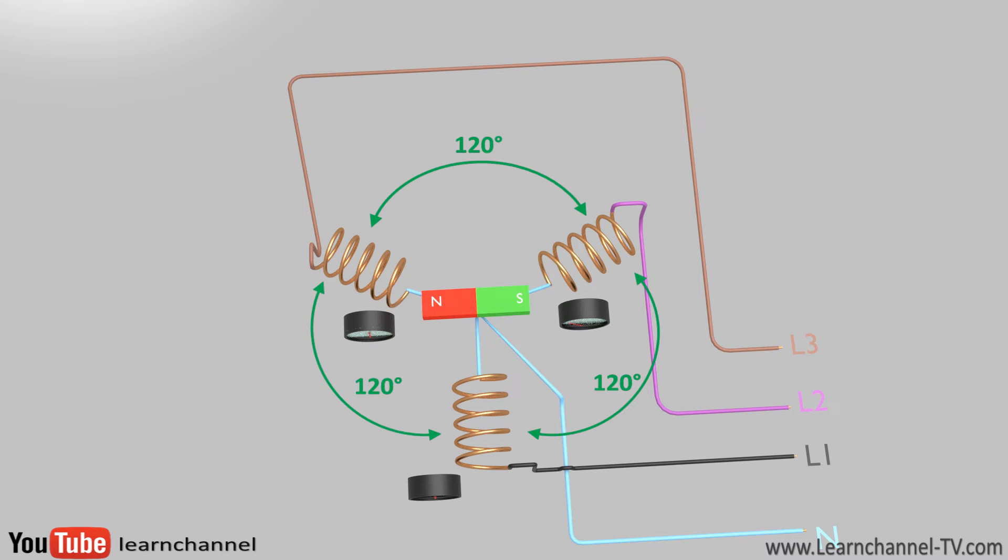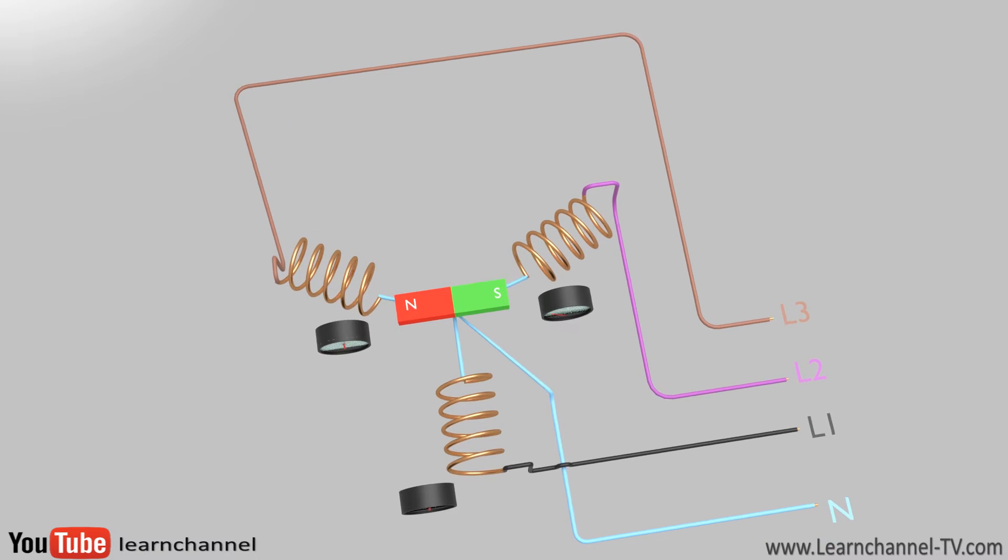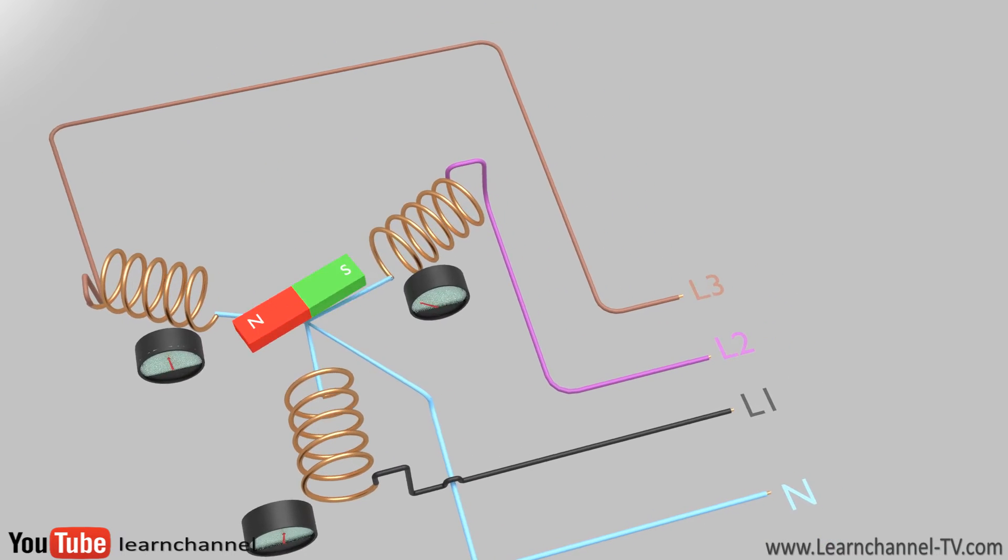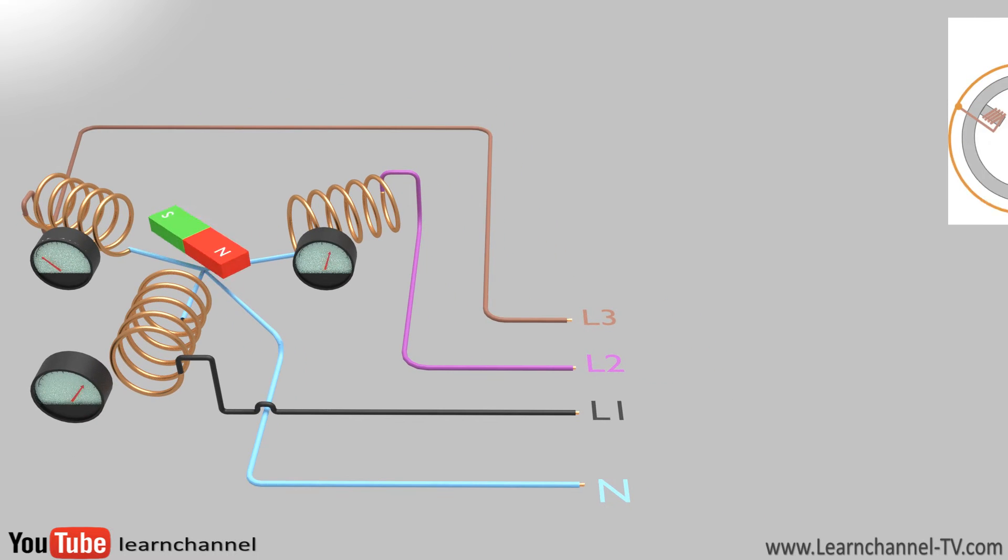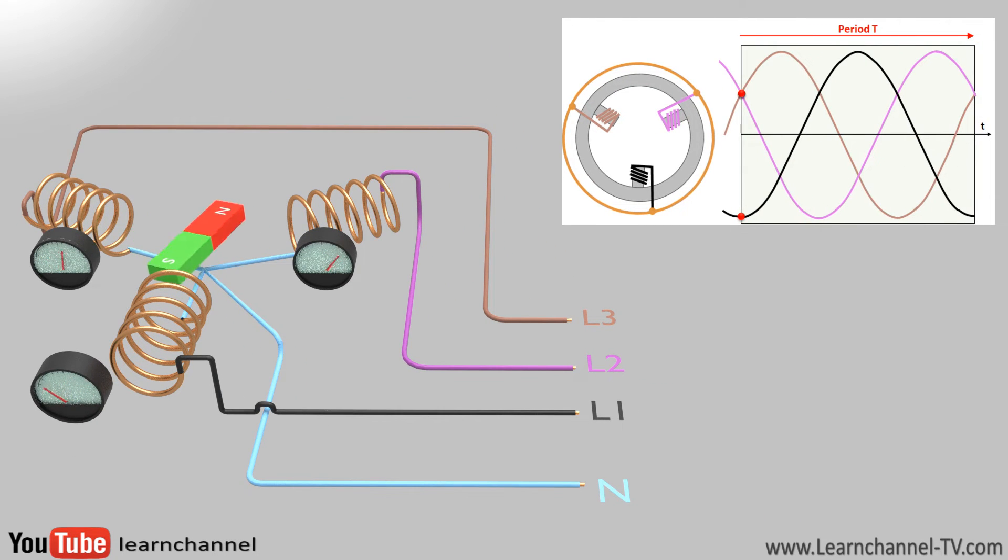To generate a three-phase voltage, three coils are required, which are offset by 120 degrees from one another. Here, the ends of the coils are connected to a star point. As soon as the magnet rotates inside, an electrical voltage is induced in each of these coils. A 360 degree rotation of this magnet corresponds to a complete period time of the induced voltage, as you can see in the line diagram.